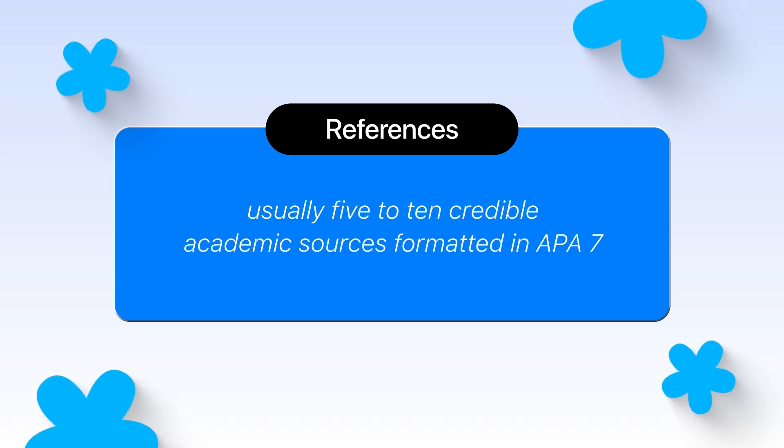Finally, a proper proposal ends with references - usually five to ten credible academic sources formatted in APA 7. The key thing to emphasize is that a proposal isn't the research itself, it's the roadmap.